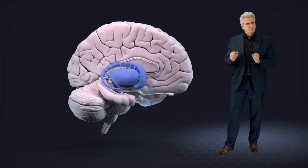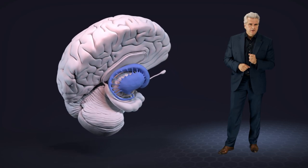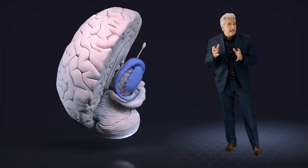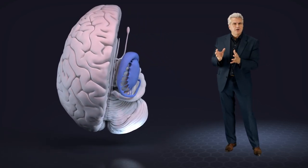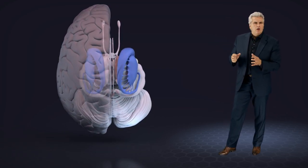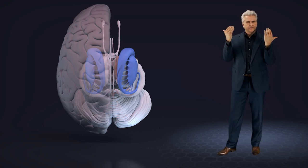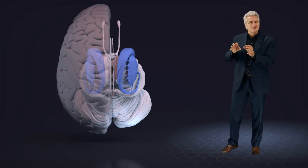But who helps the basal ganglia to decide if and which action is to be performed? On the one hand, it is our consciousness that tries to exert influence.